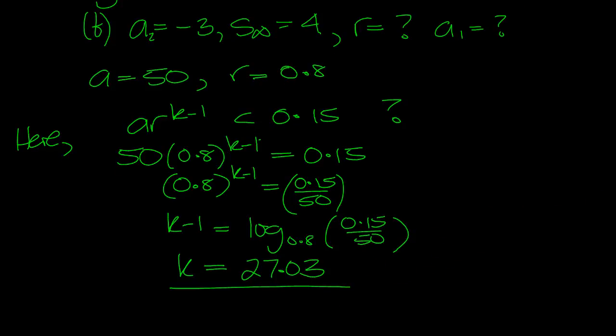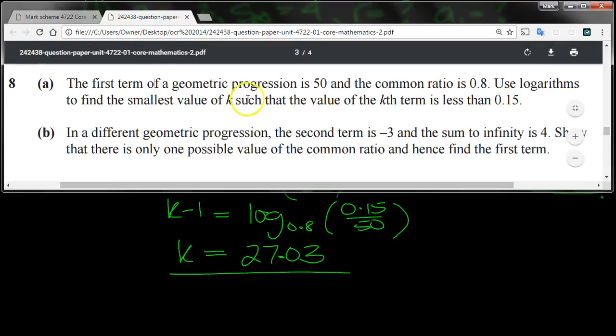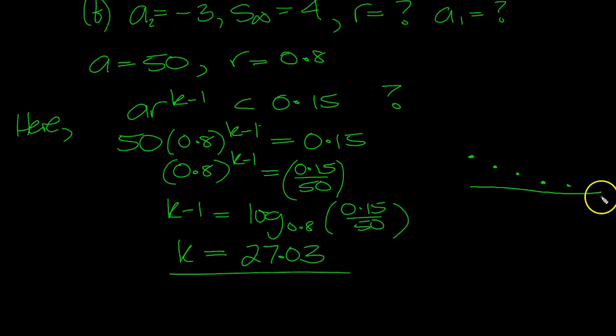So this is a decreasing sequence. The first term is 50, then 0.8 times 50. The 27.03 is here. The question asks to find the smallest k such that the value is less than 0.15. Well, it would be the term after, wouldn't it? After this value. So k equals 28.